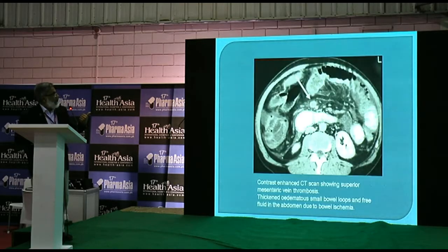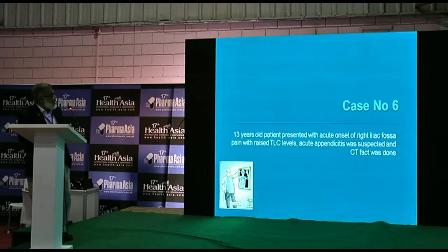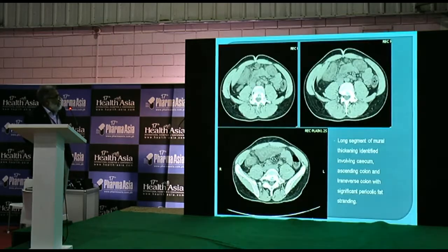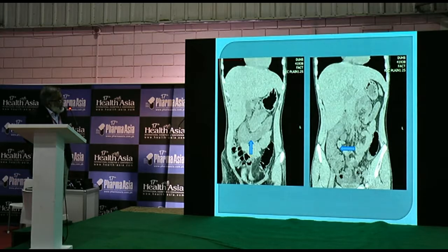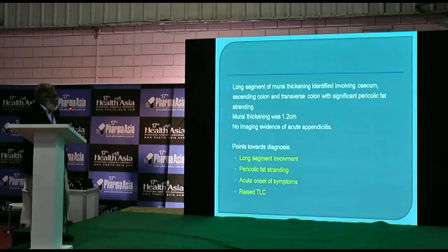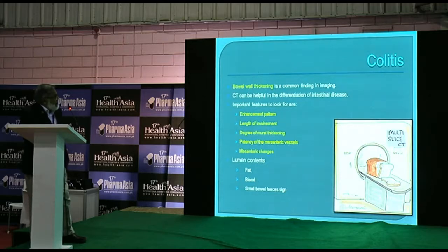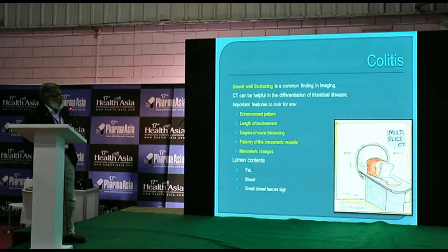Teaching points for portal vein thrombosis: circumferential bowel wall thickening and intramural edema causing hyperattenuation in the thickened bowel wall. Case 6: a 13-year-old patient presented with acute onset right iliac fossa pain and raised DLC. Acute appendicitis was suspected but CT showed long-segment mural thickening involving the cecum, well appreciated on coronal views. Long-segment involvement with pericolic fat stranding and raised DLC pointed to a diagnosis of colitis.